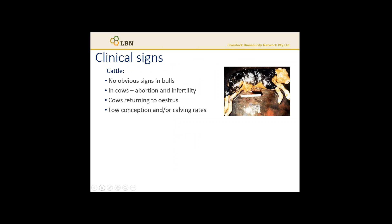Although there are generally no clinical signs in an infected bull, in cows it has the major potential for productivity impacts through abortion and infertility. In a naive herd, or a herd that hasn't been exposed before, conception rates can drop to as low as 40%. Once exposure occurs, some immunity in cows and heifers can develop, but reinfection is possible once immunity wanes. Often you will see permanent infertility in females that have contracted uterine infections in up to 10%.